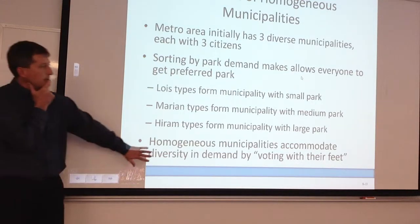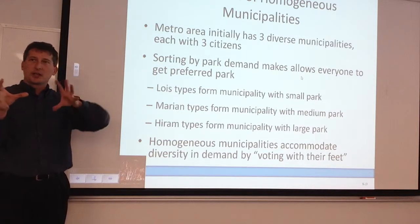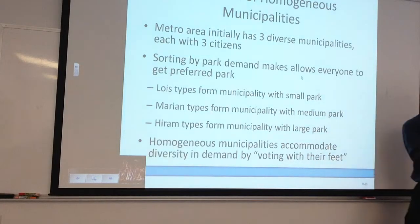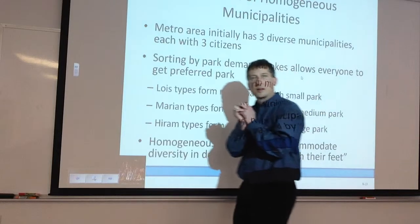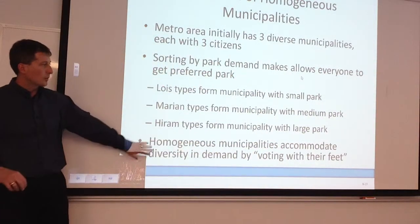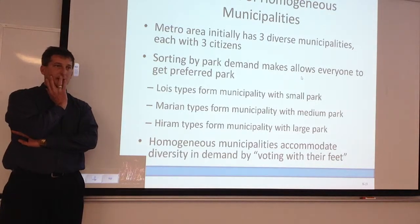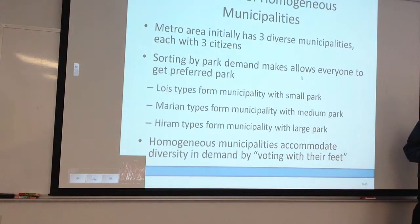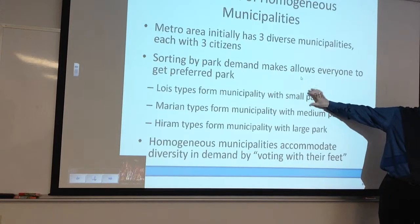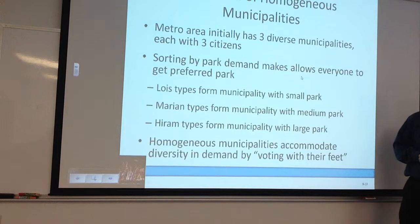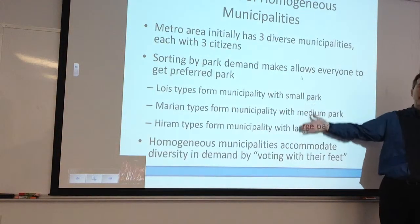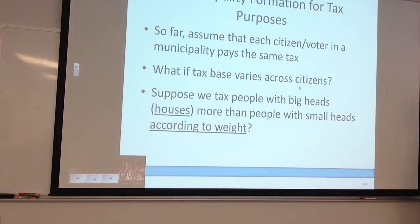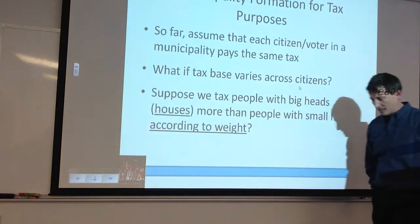What's going to happen over time in a dynamic environment — maybe additional people are coming in, or there are small-park types, big-park types, and medium-park types? The idea of voting with your feet: people move and sort themselves. If there's a different cost associated with each park preference, we're going to start seeing people create their own communities — the Lois community, the Marion community, the Hiram community. They'll group together, because somebody's always getting shorted under the majority rule outcome.